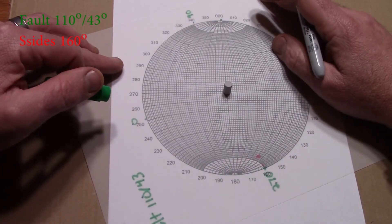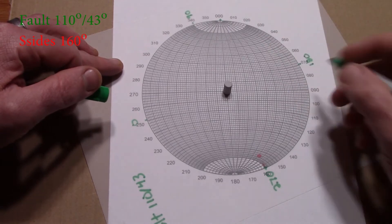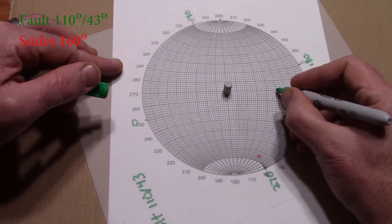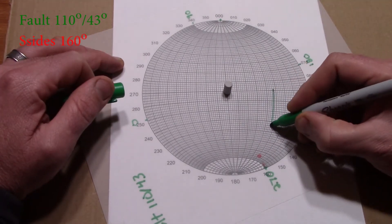First, plot the 110,43 plane, as we learned before, by making 110 degrees, rotating to the north, counting in from the right 43 degrees, and using our guiding great circle to draw the plane on our StereoNet.